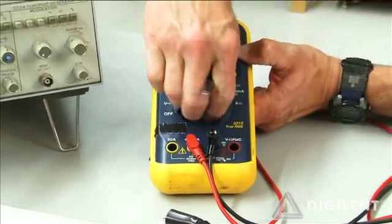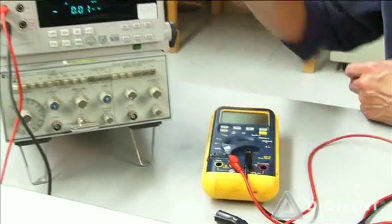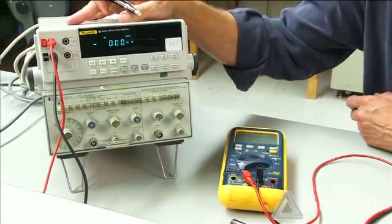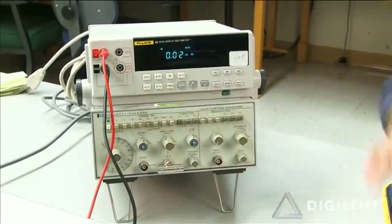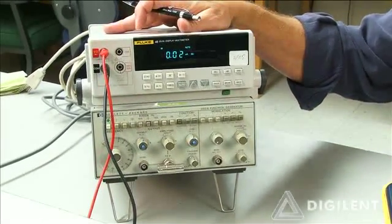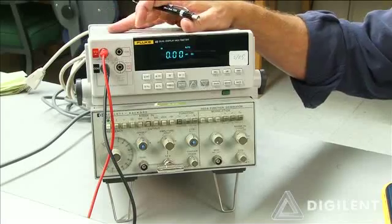DMMs also come in a bench type device. This is a bench DMM. Its operation is essentially the same as this one. It has some additional capabilities, none of which will be really important to us in this course.